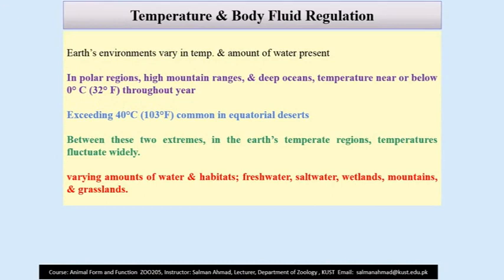The earth's environment varies in terms of temperature and amount of water present. In polar regions, high mountain regions, and deep oceans, temperature is nearly zero or less than zero throughout the year. Whereas in equatorial deserts the temperature usually exceeds 40 degrees Celsius throughout the year. Between these two extremes there is a temperate zone where the temperature fluctuates.